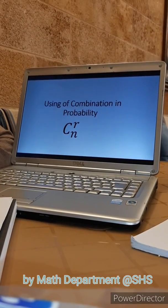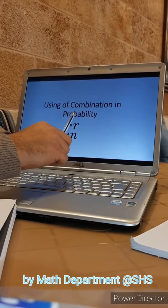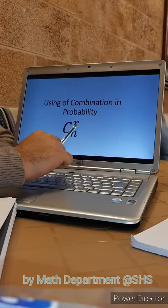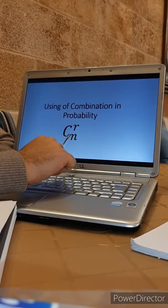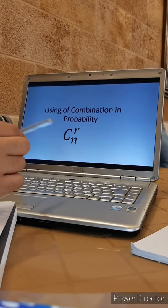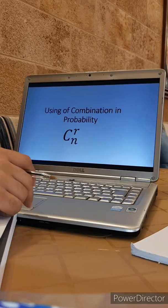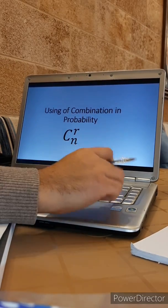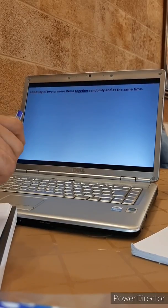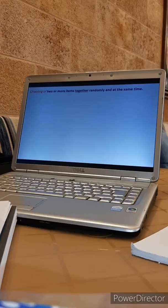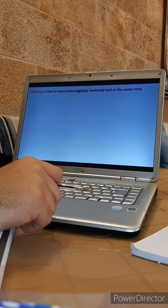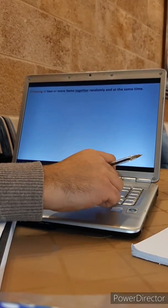Hello everyone, today we are going to talk about combination and probability. In C(R) out of N, it's very important that R should be less than or equal to N — this is one of the main conditions. We've talked about conditional probability before, and now we will talk about the probability when we use combination: choosing two or more items together randomly and at the same time.